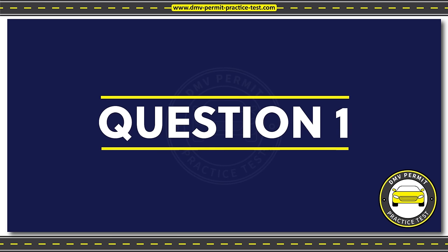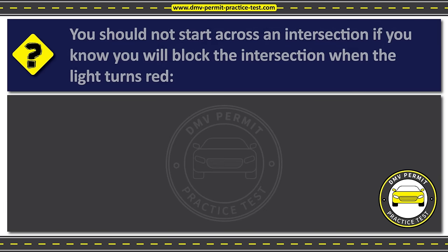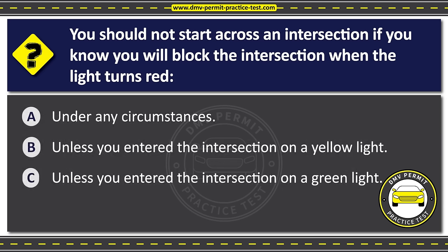Question one. You should not start across an intersection if you know you will block the intersection when the light turns red. Option A: Under any circumstances. Option B: Unless you entered the intersection on a yellow light. Option C: Unless you entered the intersection on a green light. The correct answer is Option A: Under any circumstances.